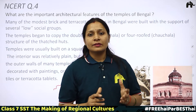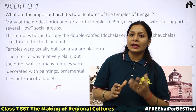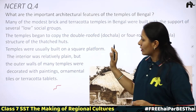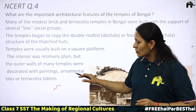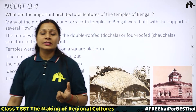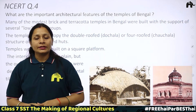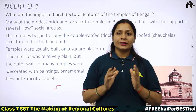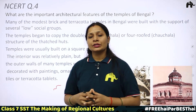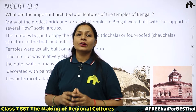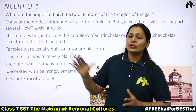Temples were usually built on a square platform. The interior walls were relatively plain, but the outer walls of many temples were decorated with paintings, ornamental tiles, or terracotta tablets. As you can see in the picture, these are double-roofed and four-roofed temples. The important architecture features of Bengal temples were the do-chala or char-chala roof style, modeled after Bengal's thatched huts, built on a square platform with decorated outer walls.